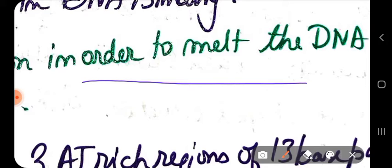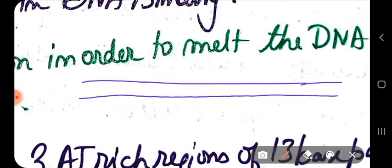If you look at the origin of replication of E. coli — this region — it has a 5' end and a 3' end.